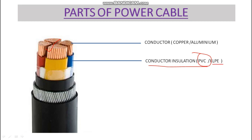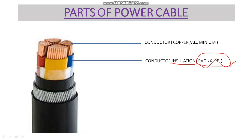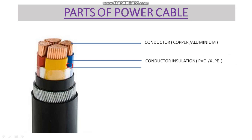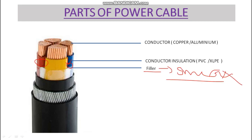This is the insulation of the conductor. It can be PVC (polyvinyl chloride) or XLPE (cross-linked polyethylene). We'll discuss different types of cable insulation in the next video in detail. Then we have a gap between the cables which we fill with filler — this provides smoothness and flexibility to the cable.